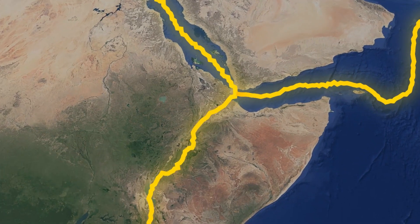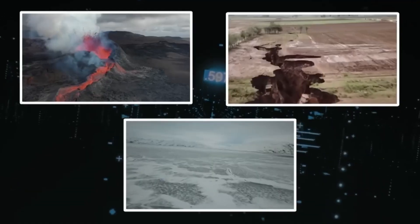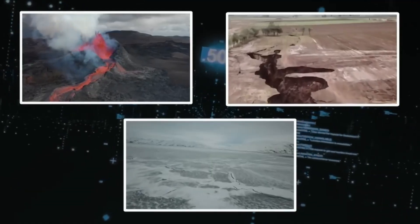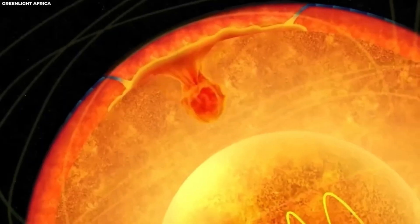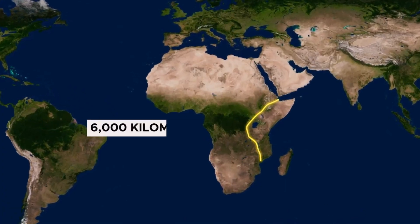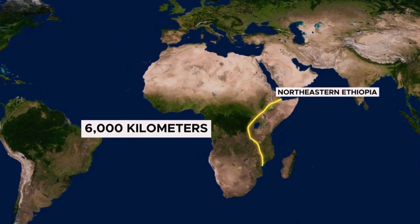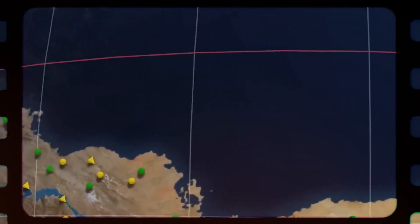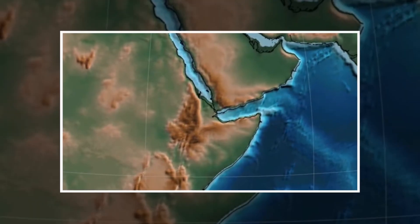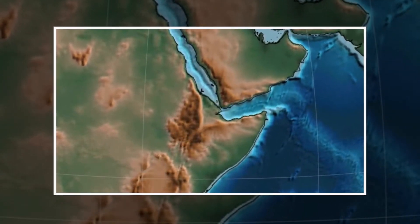This dramatic transformation will not occur overnight — it is estimated to take tens of millions of years. However, the signs of this future division are already visible. Currently, the rift is widening at rates of a few millimeters to centimeters per year. While imperceptible on a human timescale, this rate is significant over millions of years.